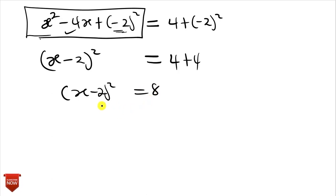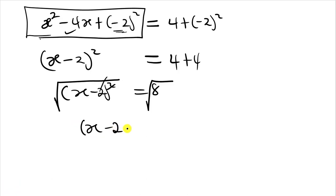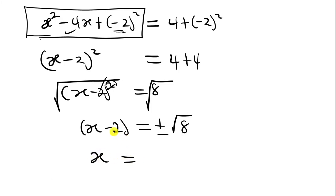Since we are solving for x, we take the square root of both sides. The square and the square root cancel on the left, giving us x minus 2 equals plus or minus the square root of 8. We took the square root of both sides to get rid of the square. Now solving for x: we transpose the negative 2 to the other side, giving x equals 2 plus or minus the square root of 8. That plus or minus separates the two values, because any quadratic equation gives two values.